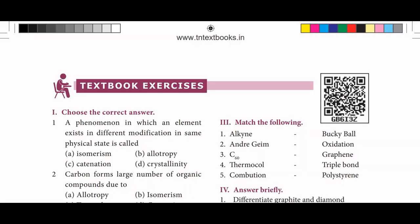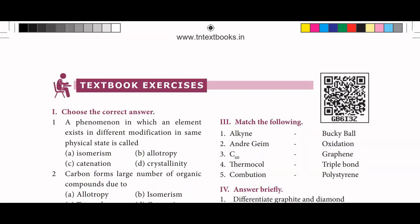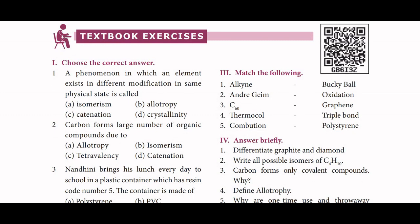So first, textbook exercise: Choose the Correct Answer. A phenomenon in which an element exists in different modifications in the same physical state is called allotropy. Second one: carbon forms a large number of organic compounds due to the same phenomenon, which is allotropy.